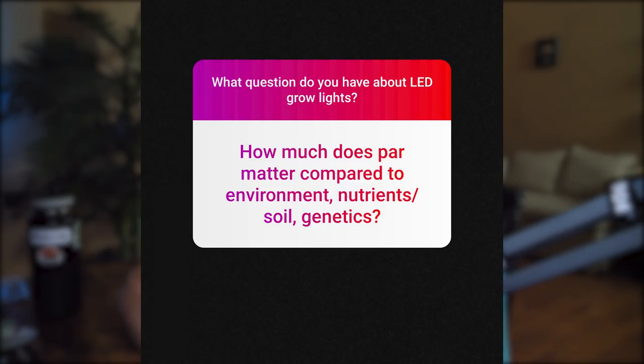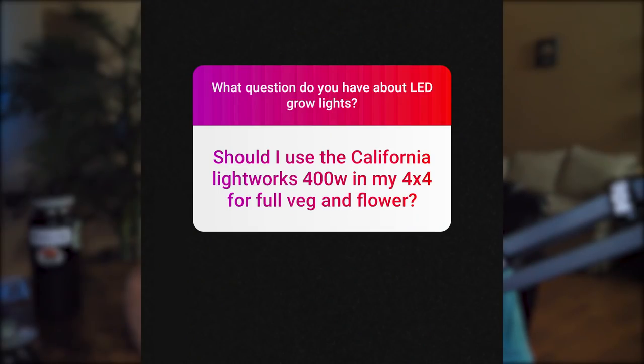How much does PAR matter compared to environment, nutrients, soil, and genetics? One could argue it's the most important thing. I personally think genetics is the baseline — you want to go after genetics first, whether it's a high-yielding strain, specific terpene profile, or cannabinoid profile. From there, lighting is next. Nutrition and environment are pretty equal after that. Lighting is definitely one of the most important things for plant growth — too much can cause light burn, too little means suboptimal growth.